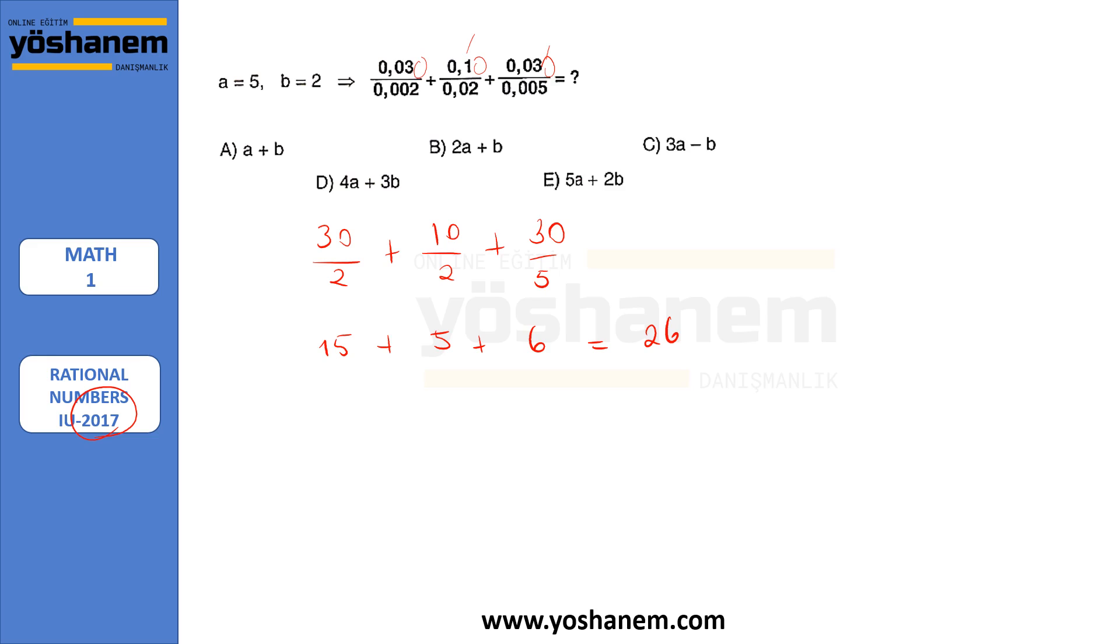Now I need to convert it as AB form. So 26, it could be like 25 plus 1, or 20 plus 6. I cannot write 25 plus 1 because I cannot change it into B form. Because B is 2. That's why I'm gonna try this one. So 20 is 4 times 5, and 6 is 3 times 2. So 5 is A. So 4A plus 2 is B, 3B. That's why 4A plus 3B is my answer.